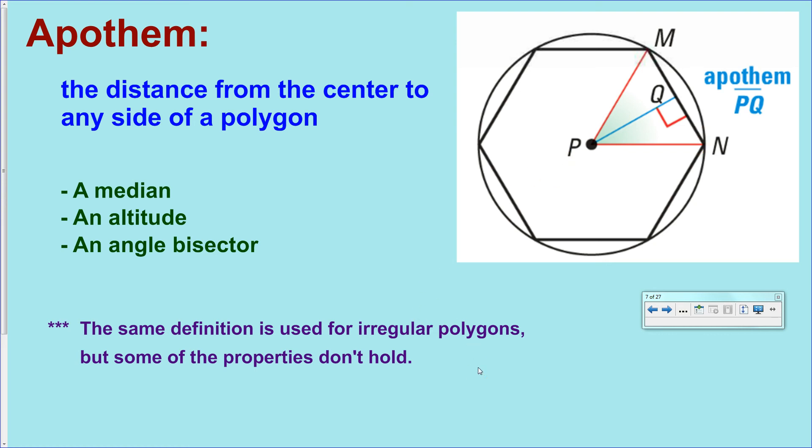While the definition for an apothem holds up for irregular pentagons, some of these properties might not hold. We're not going to discuss irregular polygons in this particular section. We're going to focus only on regular polygons.